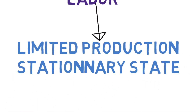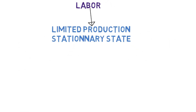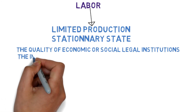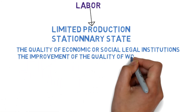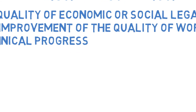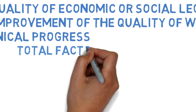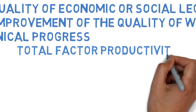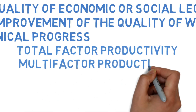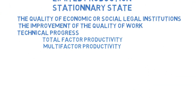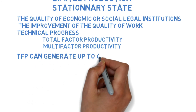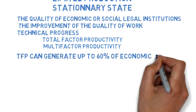Since he thought of other relays of growth: the quality of economic, social, and legal institutions; the improvement of the work's quality; and finally, technical progress. This is what we call the Total Factor Productivity, or multi-factorial productivity. It is important to remember that the TFP can generate up to 60% of economic growth.